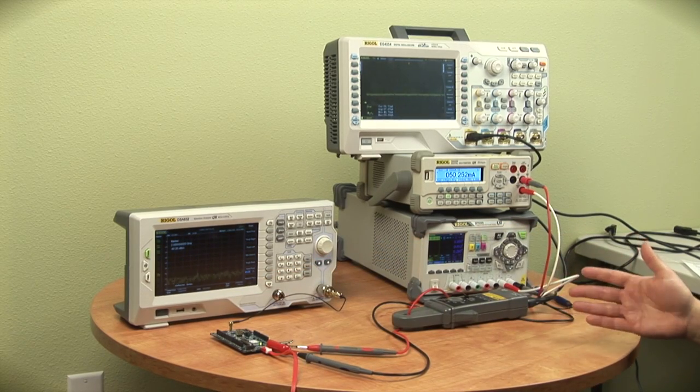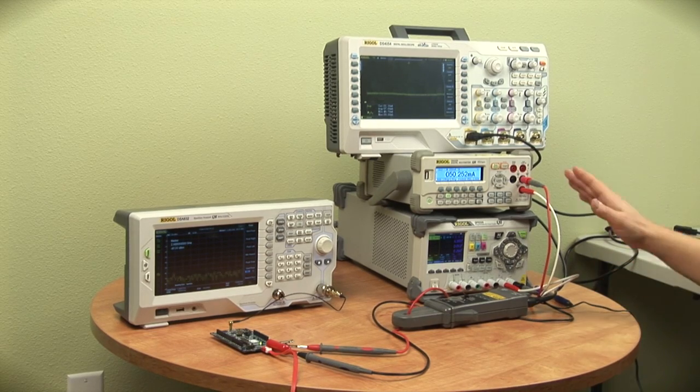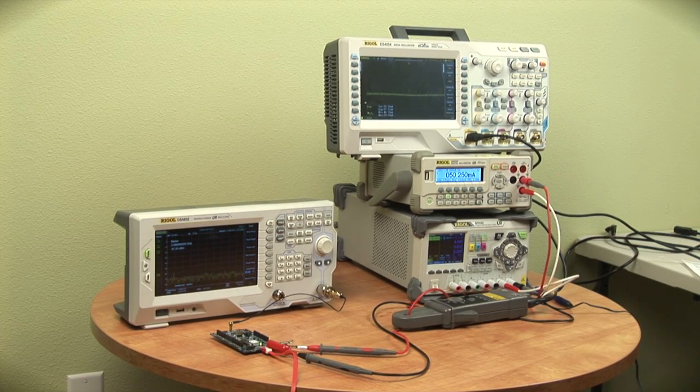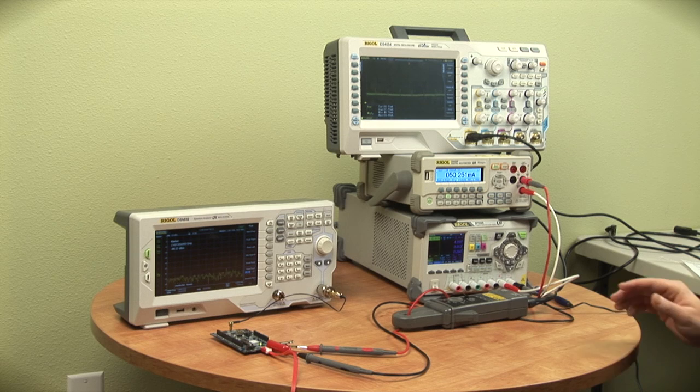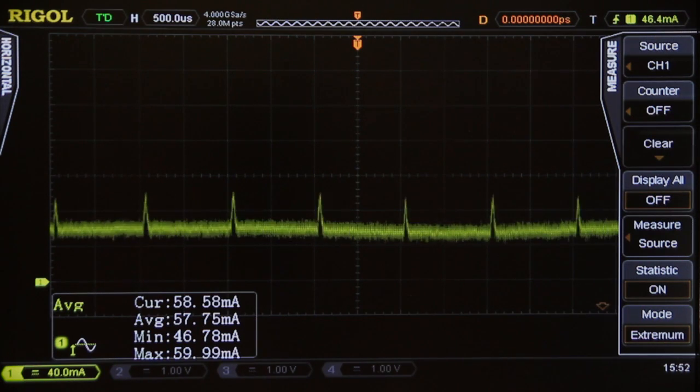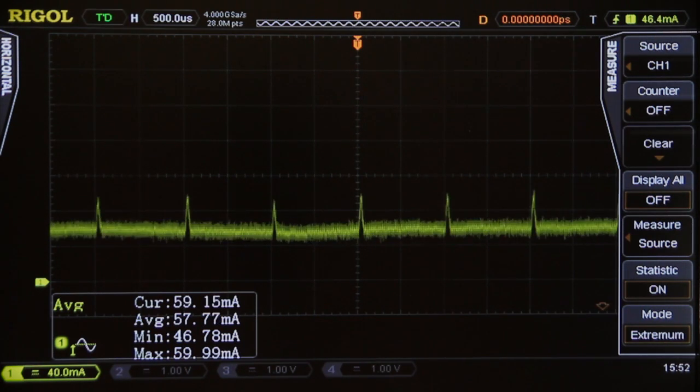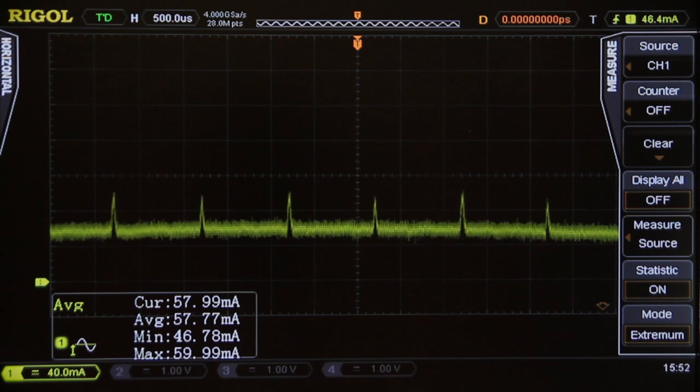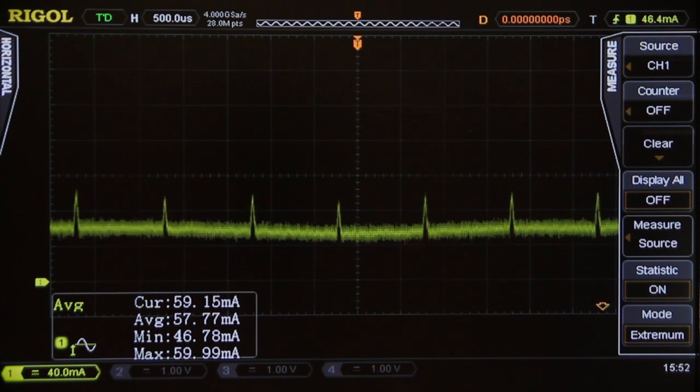And now we're powering it with the power supply over here. We can see that the current on the DMM is showing about 50 milliamps, and on the oscilloscope we're showing about 58 milliamps. The difference really is these current pulses that are happening where the IoT uses the power in a non-DC fashion.